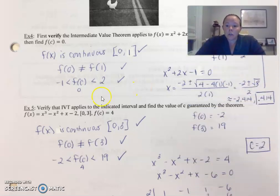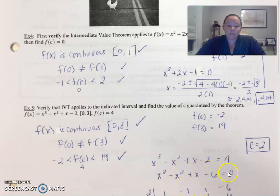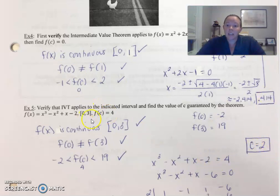Verify that IVT, Intermediate Value Theorem, applies in the indicated interval, and find the value of c guaranteed by the theorem. This time we're working a little bit backwards, but first: all three steps — continuous on the closed, endpoints do not equal each other, and my value four is within the interval. Set the function equal to four. I did synthetic division here — you can use your graphing calculator if you have one. These will be on Canvas. Make sure you give me that x or c value that's within the interval.